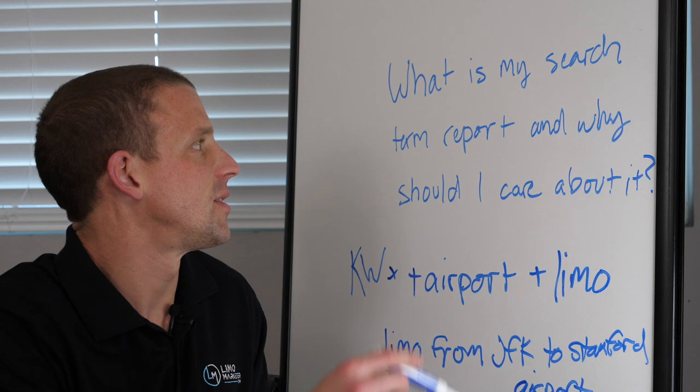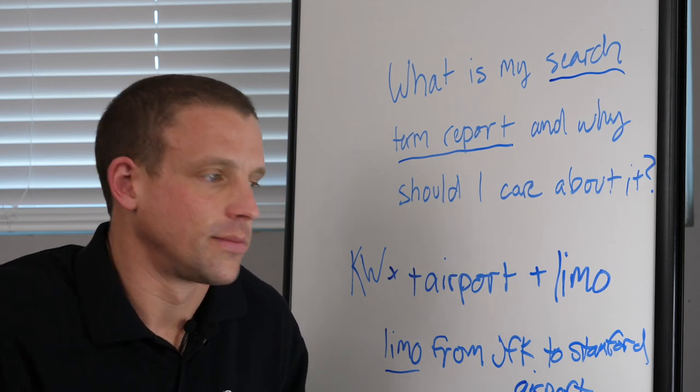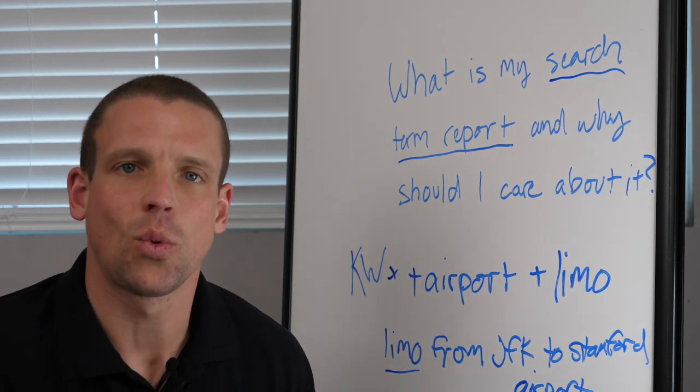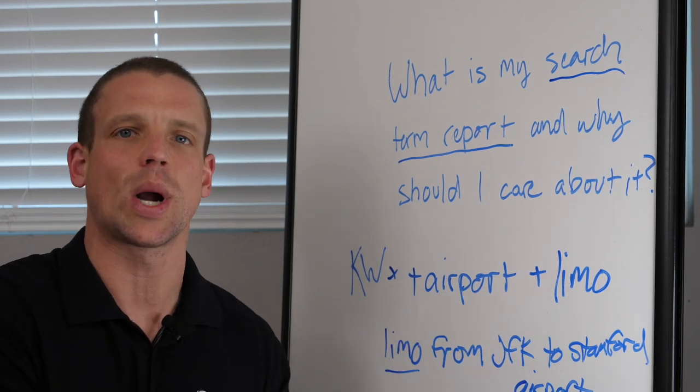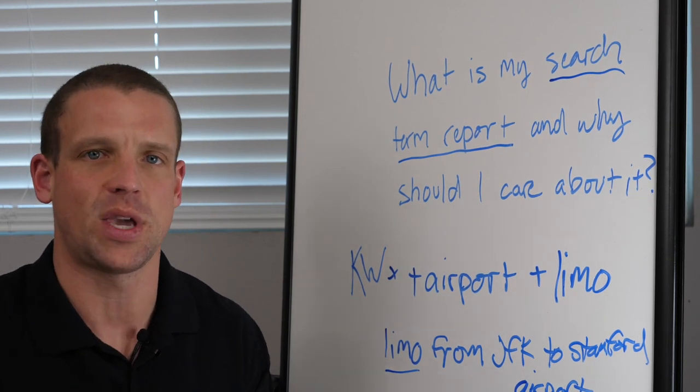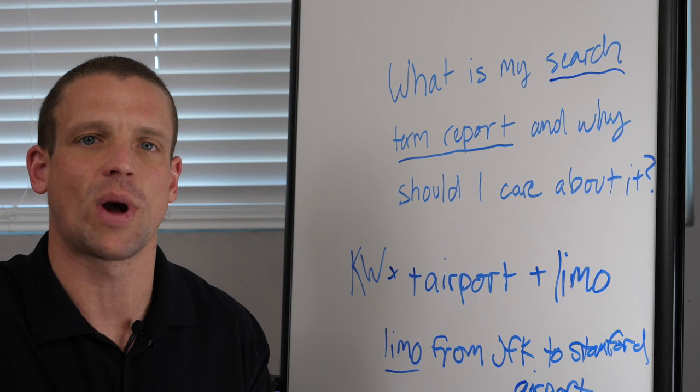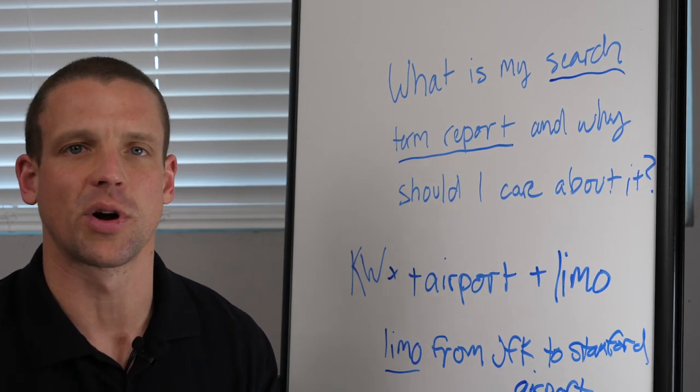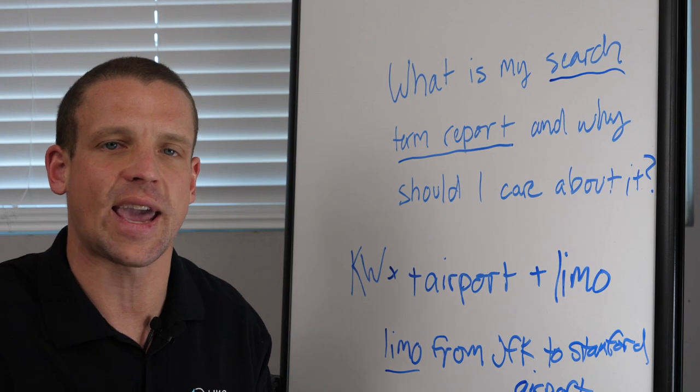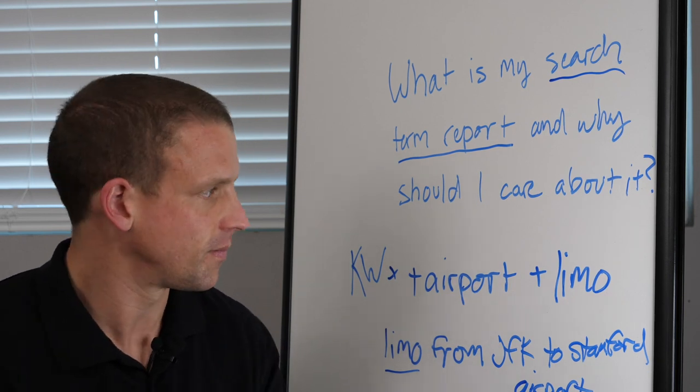So it's very important that we're checking the search term report. I would check it every day because let's say you're spending $20, $30, $40 a day - half that money could be going to waste. If your Google Ads campaign is built incorrectly, your ads will show to the wrong people. The whole idea behind this is showing our ads to the right people. Success with Google Ads or Microsoft Ads comes down to three things: showing your ads to the right people, spending as little as possible per click to get them to your website or landing page, and then sending them to a page that's going to get them to take action - to convert, to call you, to fill out a form, or even book online.